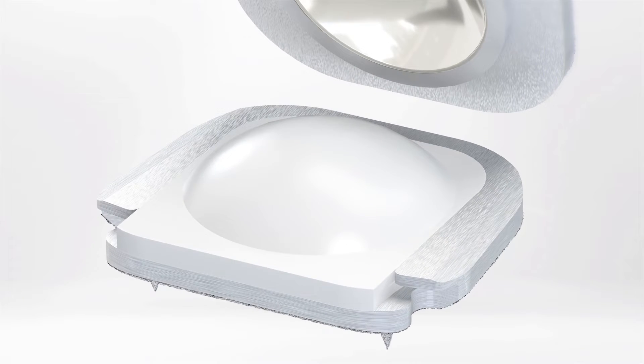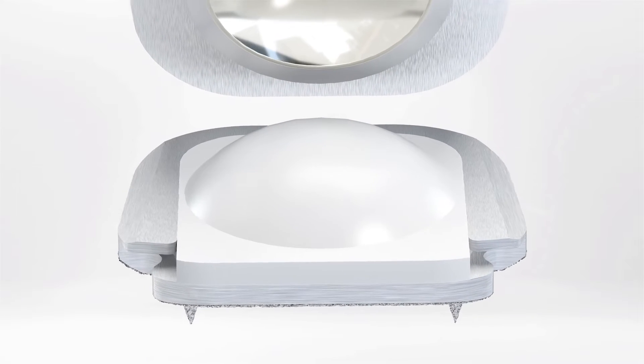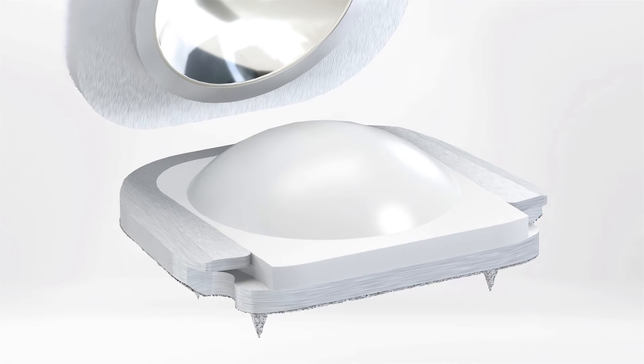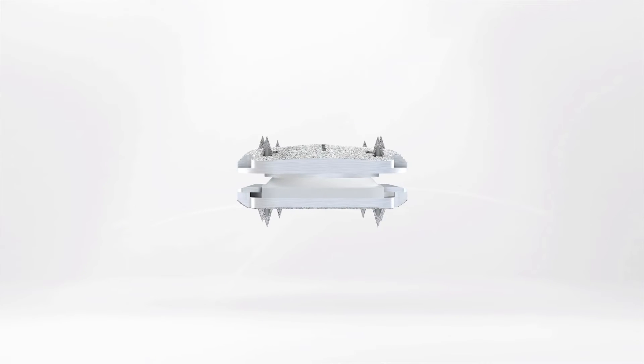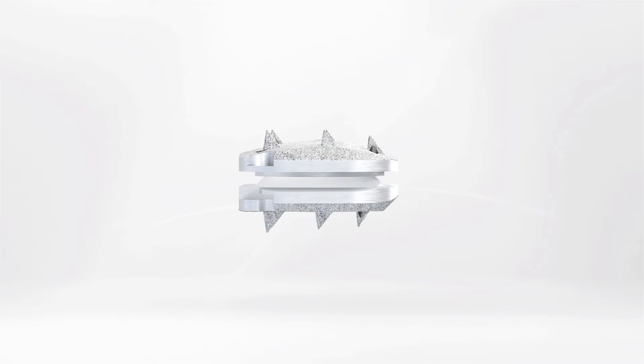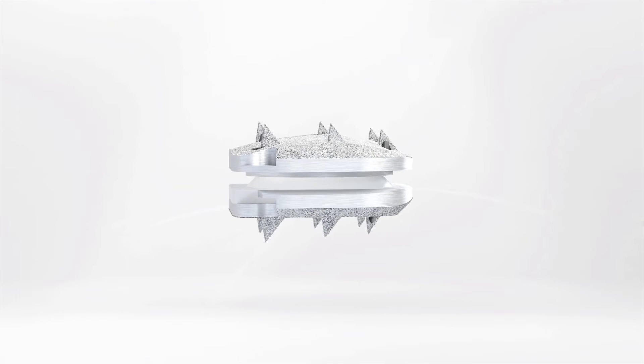ProDisc C Vivo is composed of two cobalt chrome alloy end plates and a polyethylene insert. The polyethylene insert is affixed to the bottom end plate forming the ball, and a polished dome in the top end plate forms the socket.